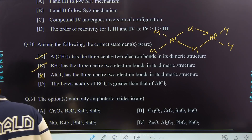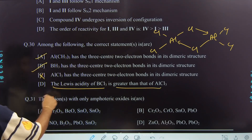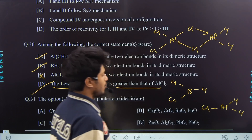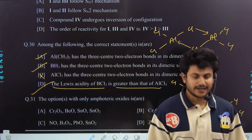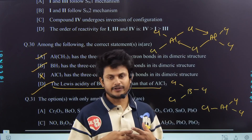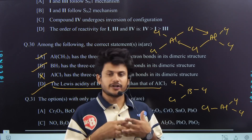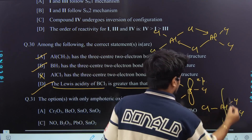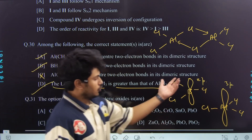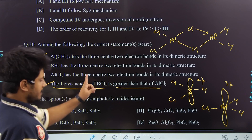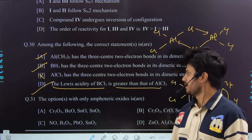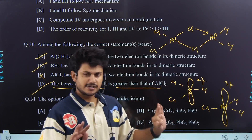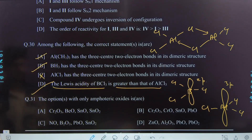Lewis acidity of BCl₃ is greater than that of AlCl₃ — true. Both are Lewis acids with vacant orbitals, but boron has a 2p orbital while aluminum has a 3p orbital. The 2p orbital is smaller and undergoes better overlapping with the base, forming stronger bonds. BCl₃ is thus a better Lewis acid — experimentally observed and supported by valence bond theory reasoning. A, B, D are the correct options.